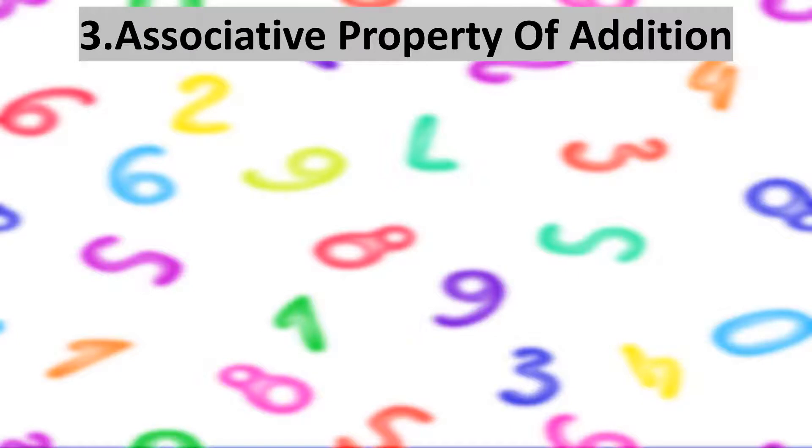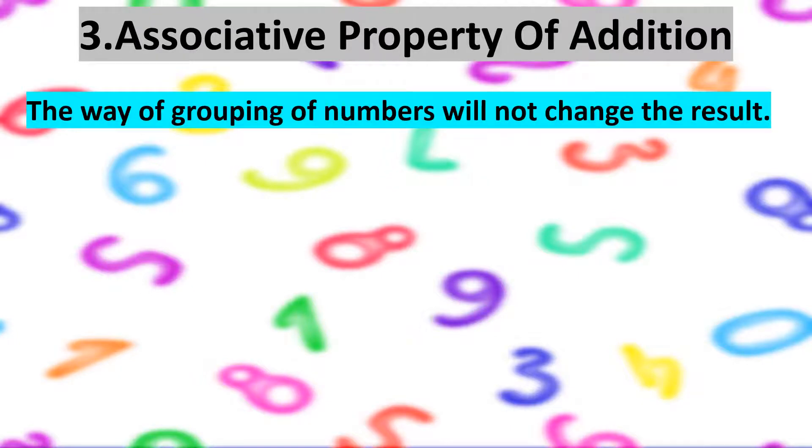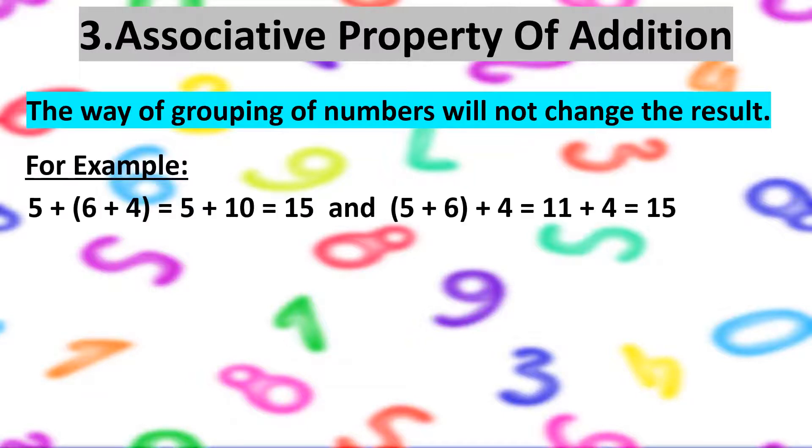Associative property of addition states that the way of grouping of numbers will not change the result. For example, for adding numbers 5, 6 and 4, I first grouped 6 and 4, then added 5 to the result of 6 and 4, that is 10. So 5 plus 10 is equal to 15.